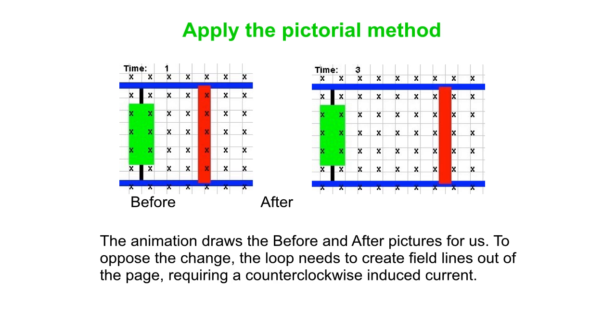And what that current will actually do is act to slow the bar down, in fact. Another way to think about it is, as we talked about, you can think of that rod as a battery with its positive terminal toward the top and the negative terminal at the bottom. And if you think of it like that, you also will generate a counterclockwise current. So lots of ways to think about that.